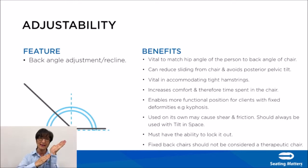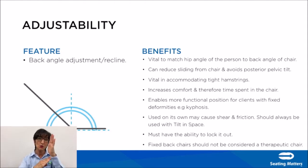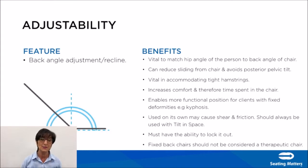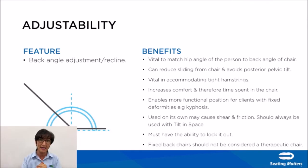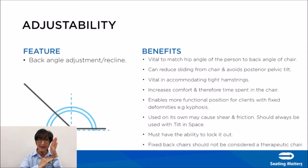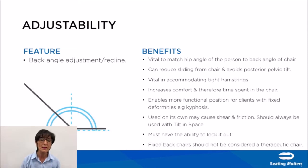When you open up the back angle of a chair you can cause the person to slide, so using it in association with tilt puts the centre of gravity behind the body and stabilises it. A clinical chair should also have the ability to lock out the back angle, because you don't want someone moving the back angle up when the client doesn't have the hip flexion to tolerate that. A fixed back chair should not be considered in a therapeutic seat.